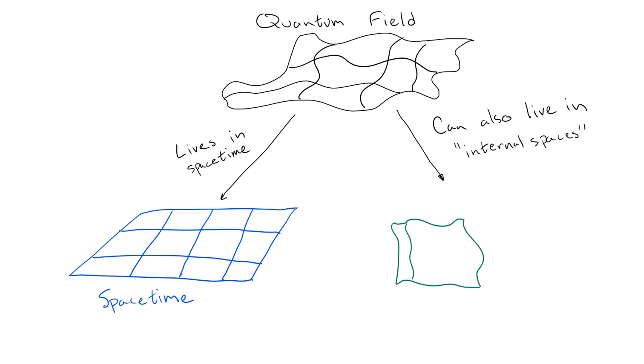Each field has to live in physical spacetime, but different fields may also live in zero, one, or multiple internal spaces. With that out of the way, we can ask, what should this internal space look like to give us a theory of quantum electromagnetism?